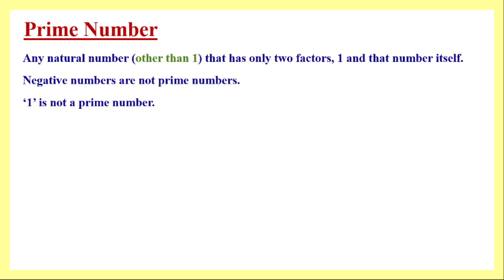Even numbers are completely divisible by two. Though two is an even number, it has only two factors: one and itself. So two is the only even number which is a prime number — that is something we have to remember.